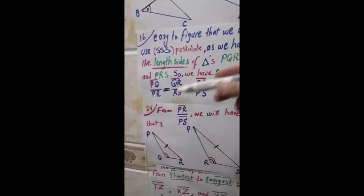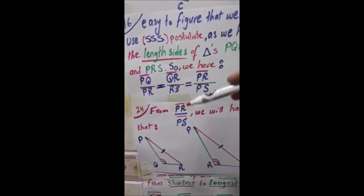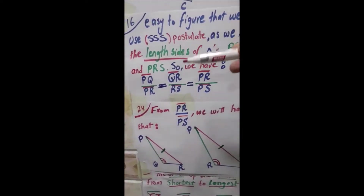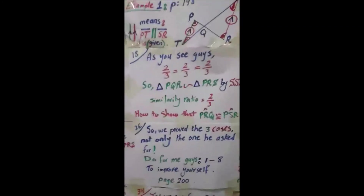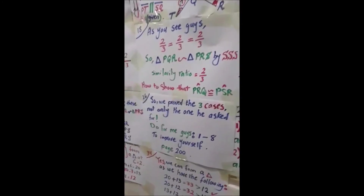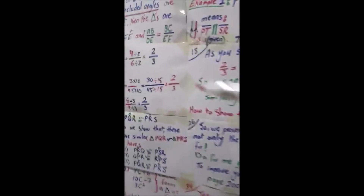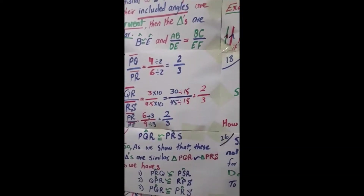Some of you may ask: what if you put the ratio the other way — PR/PQ, RS/QR, PS/PR? You would get 3/2 — no problem. The important thing is that the similarity ratio is the same for all three pairs. So either direction works.